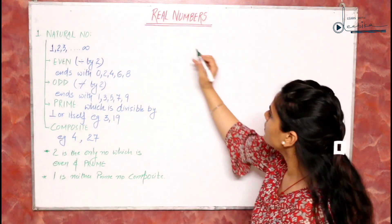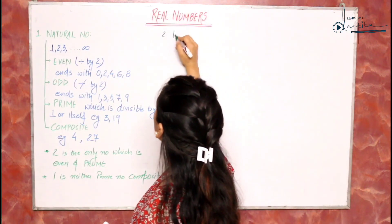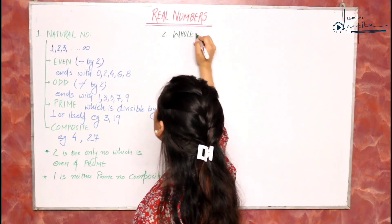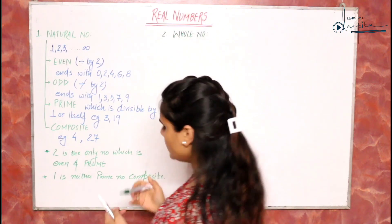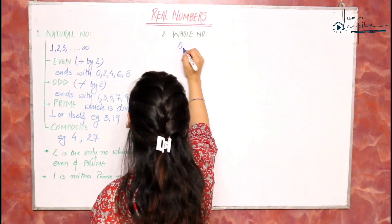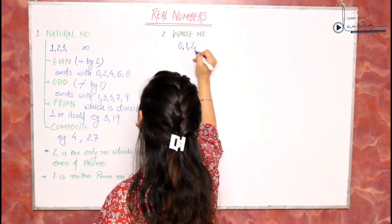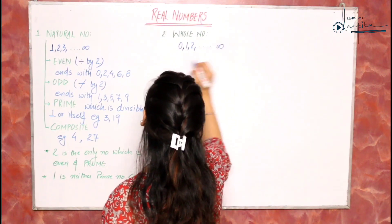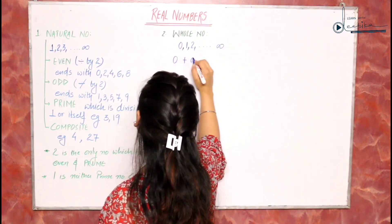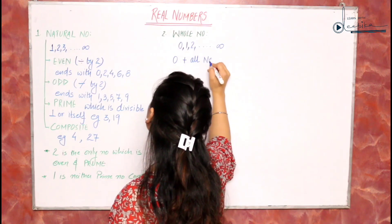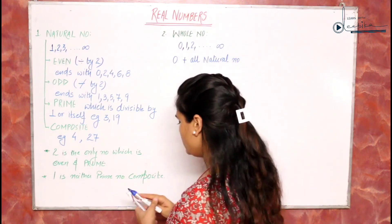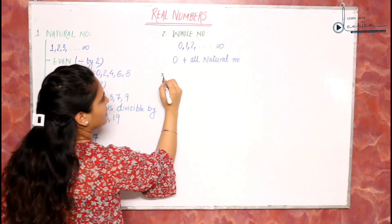Also, 1 is neither prime nor composite. So this is all about natural numbers. Next type of number is whole numbers. Whole numbers include all natural numbers and also 0, so they start from 0, 1, 2 and up to infinite. We can say 0 plus all natural numbers equals whole numbers.